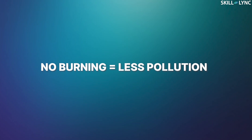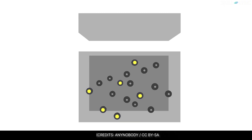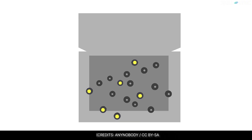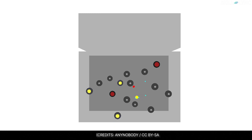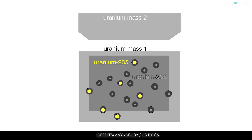One of the main advantages of nuclear reactors is that instead of burning any fuel, it derives the power from nuclear fission. Nuclear fission is a type of nuclear reaction in which the nucleus of heavy elements like uranium or plutonium is split into two parts of roughly equal mass. This splitting is accompanied by the release of some byproduct particles and a very large amount of energy.